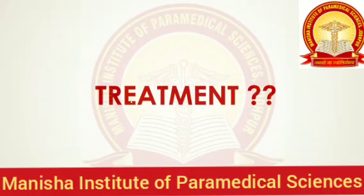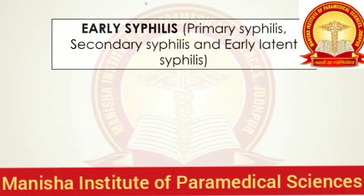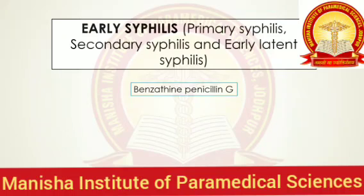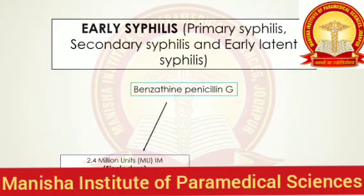How do we treat these different stages of syphilis? For early syphilis — which includes primary syphilis, secondary syphilis, and early latent syphilis — the drug of choice is a long-acting form of penicillin G called benzathine penicillin G. A single dose of 2.4 million units of benzathine penicillin G is given through the intramuscular route, and this is the treatment for the vast majority of patients.